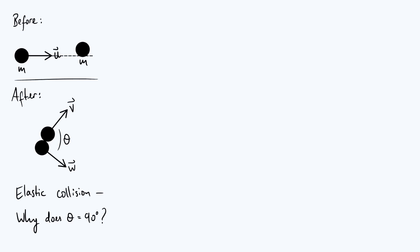After the collision the particles won't both just be moving along that same horizontal line — they're going to bounce off each other with two different velocities going in two different directions. That's what I've illustrated down here, where after the collision you have two different velocity vectors v and w pointing in different directions. I've also defined the angle between them to be theta. The interesting result is that if this is an elastic collision — in other words if kinetic energy is conserved — then the angle theta is always 90 degrees, so the particles will always be moving at right angles to each other.